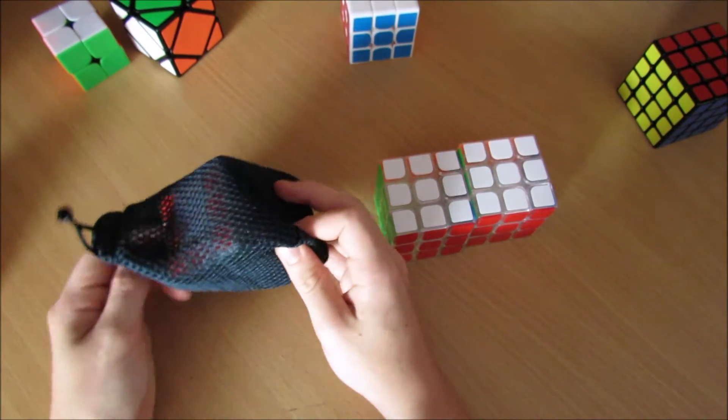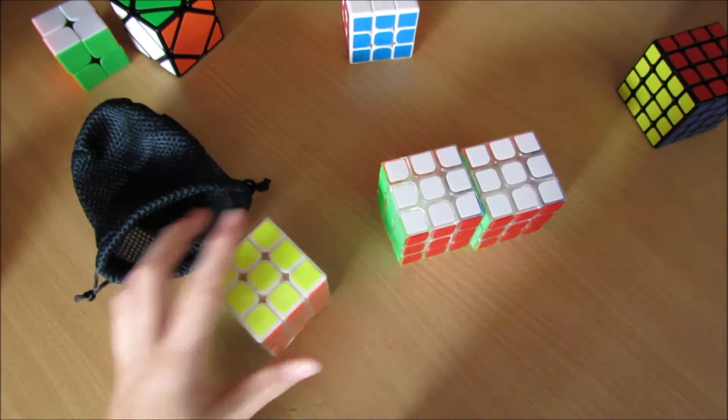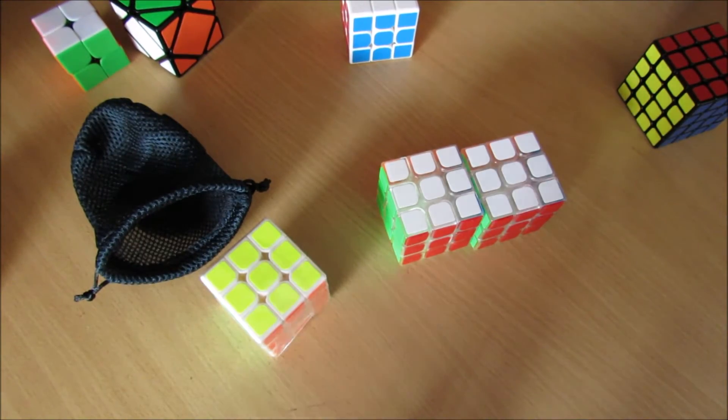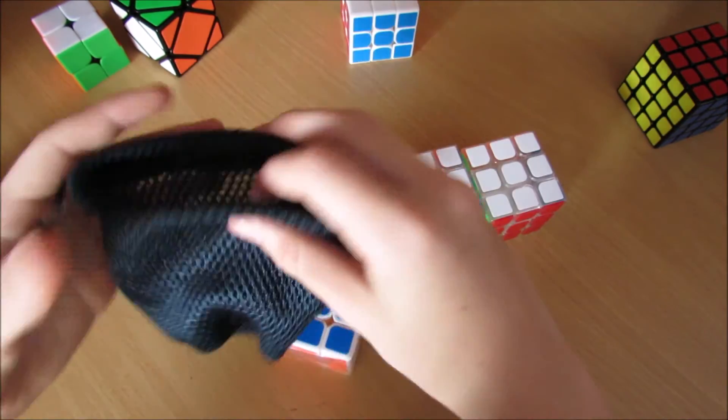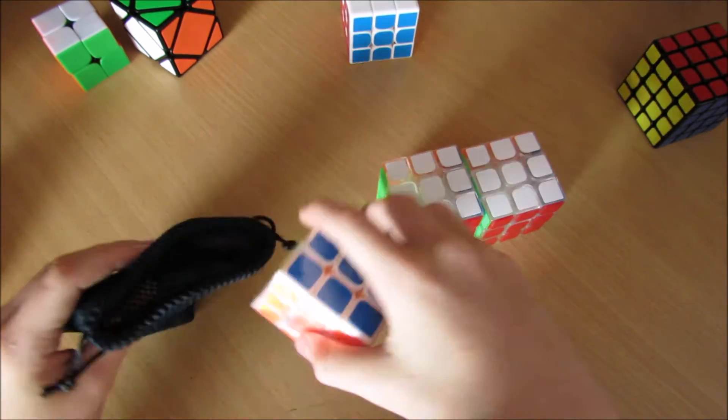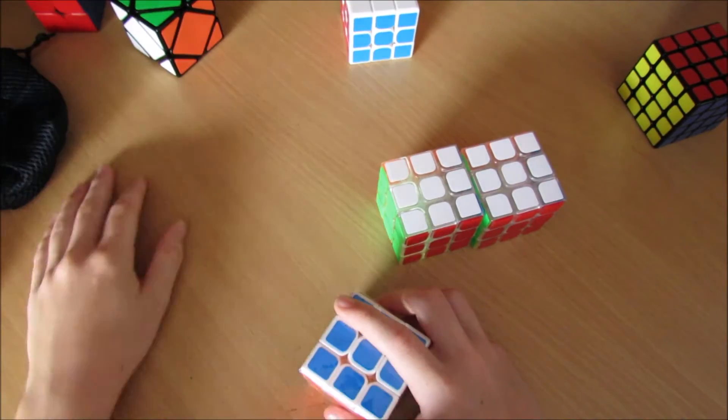Here we also have Chi Thunderclap, which isn't in a box, surprisingly, but I'm really not too fussed about that. So, here we have a bag, which you can, I guess, put your cube in. That's cool. I'll just put this off to the side a bit.